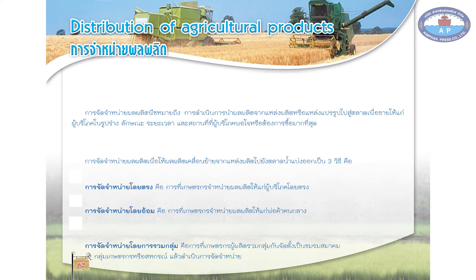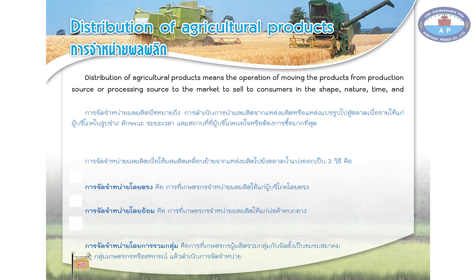Distribution of Agricultural Products means the operation of moving the products from production source or processing source to the market, to sell to consumers in the shape, nature, time, and place consumers are satisfied or want to purchase the most.